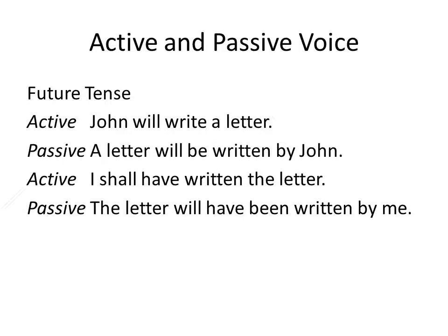Let's see how sentences are changed from active voice to passive voice in the future tense. First — Active: 'John will write a letter.' Passive: 'A letter will be written by John.' Second — Active: 'I shall have written the letter.' Passive: 'The letter will have been written by me.'